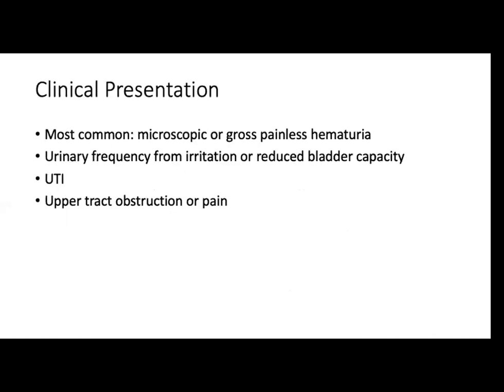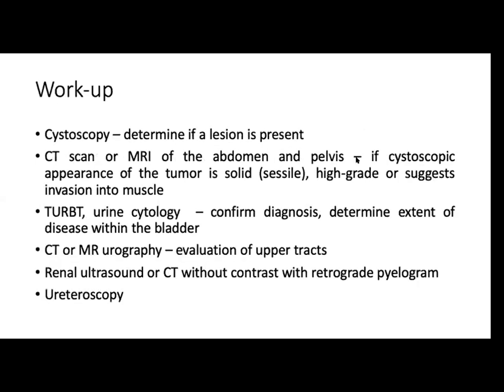What are the usual clinical presentations? Usually it's microscopic or gross painless hematuria. Urinary frequency from irritation or reduced bladder capacity is also common, as well as UTI and upper tract obstruction. Workups usually include cystoscopy, an MRI or CT scan, and eventually you'll do a TURBT.